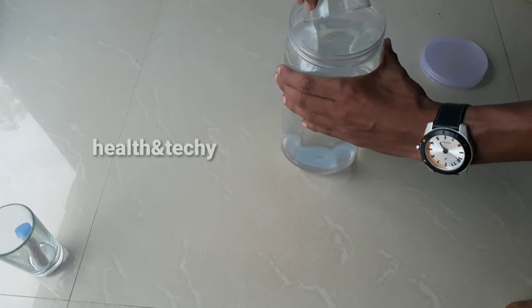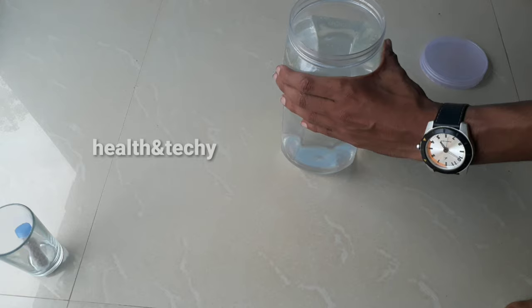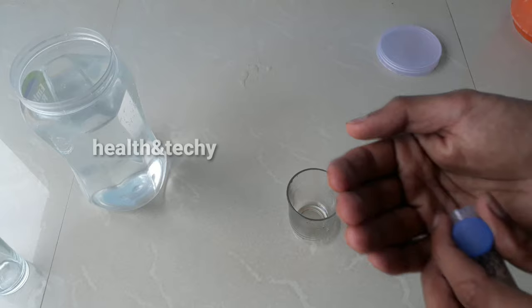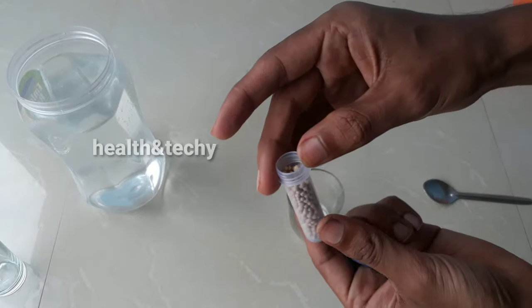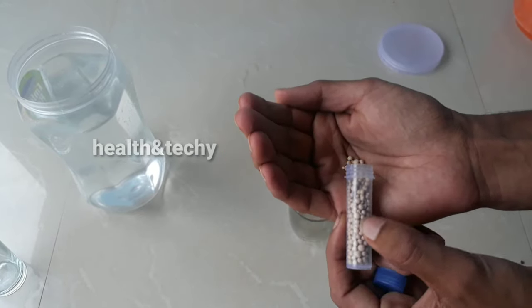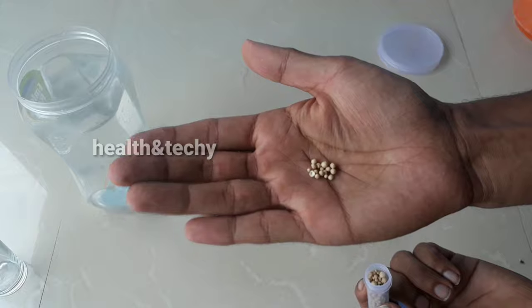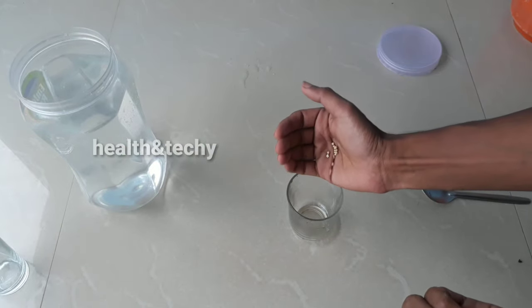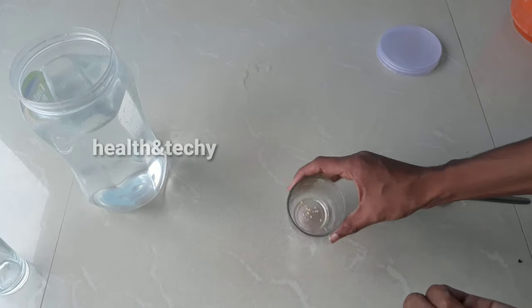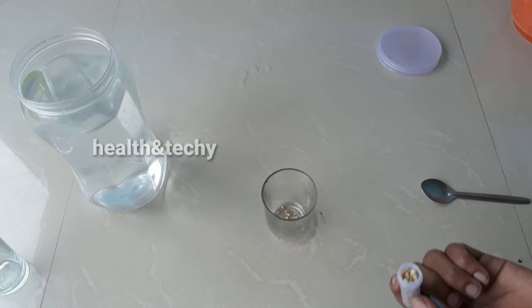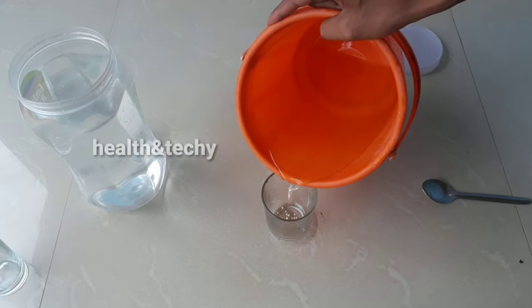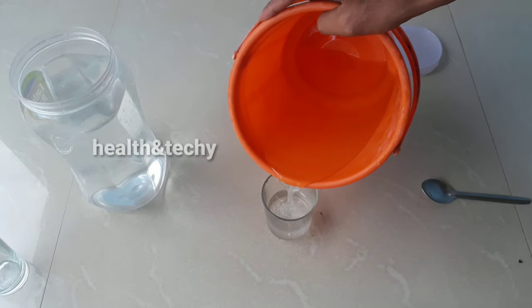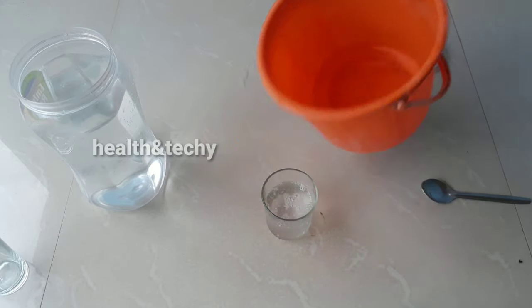Now we are going to prepare the feed for the moina culture. What I have is yeast. I am going to take a little bit of yeast. It is better to use this type of yeast rather than using powdered yeast. I am using this type of yeast for culturing moina. Now I am going to add a little bit of water into the tumbler and leave it aside for five minutes.